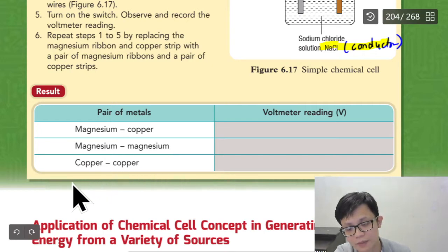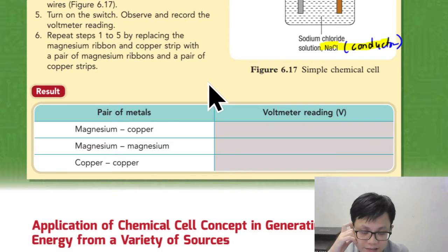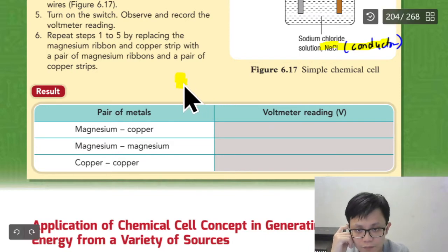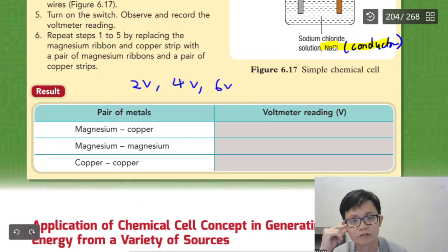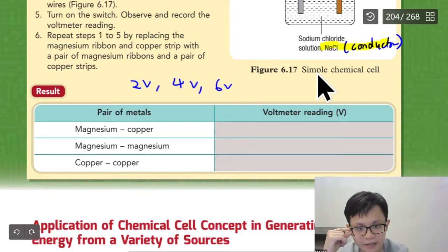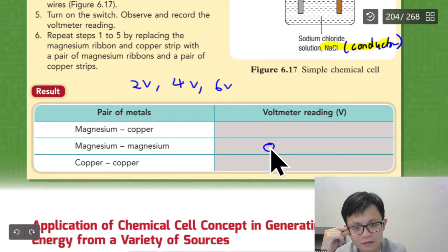Some will be high, some will be low. Assuming 2.4, 2.4, 2.4, let's say, because we didn't do the experiment. This one shows zero already. Confirm. Because it's magnesium, magnesium, zero volt. Copper and copper zero volt.